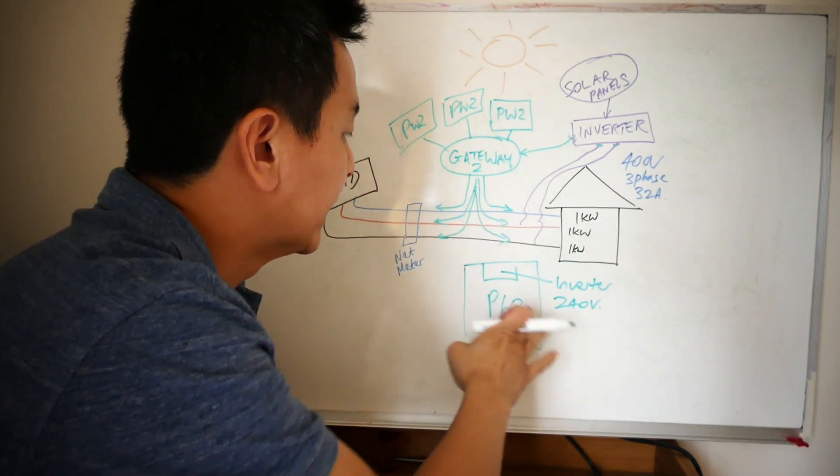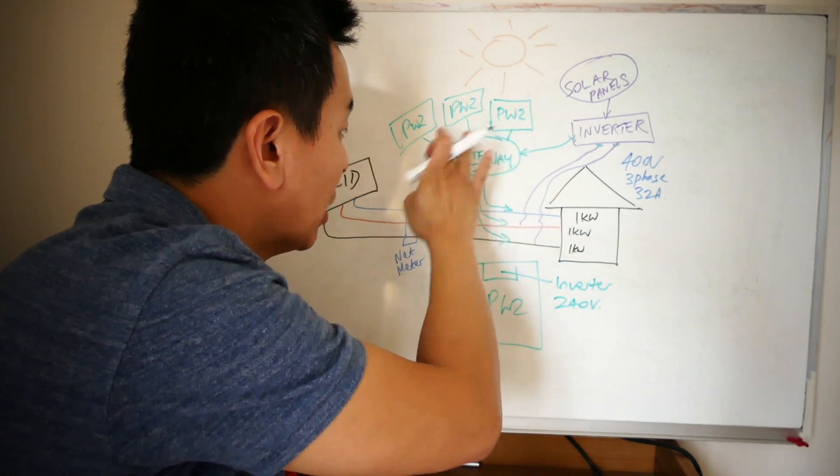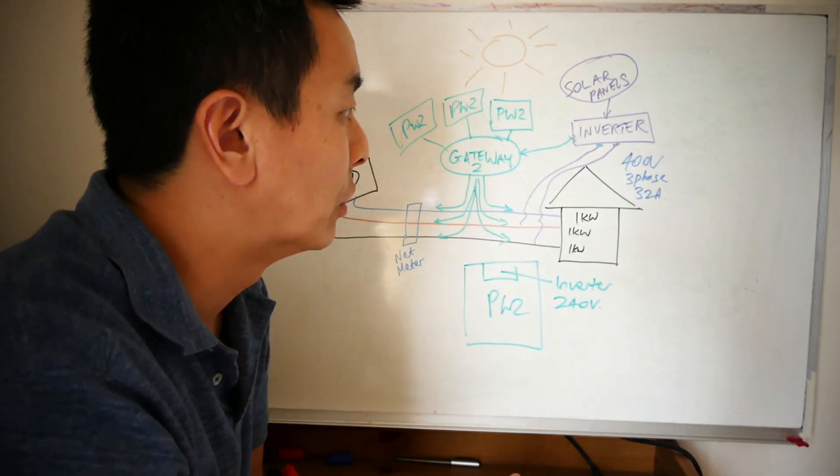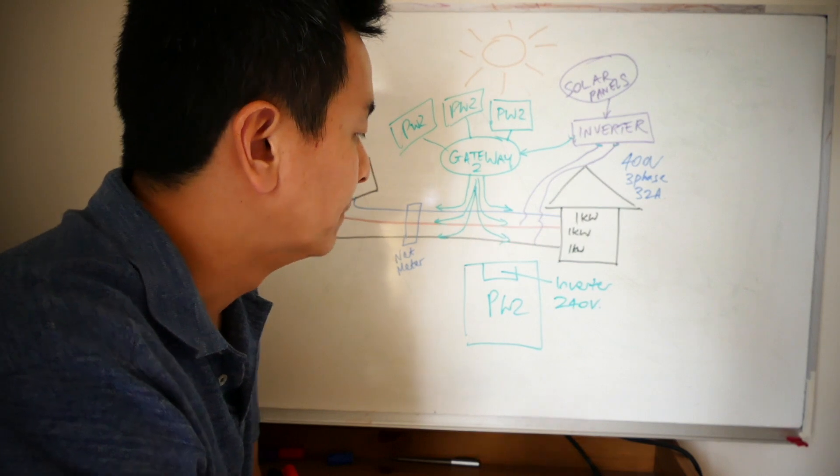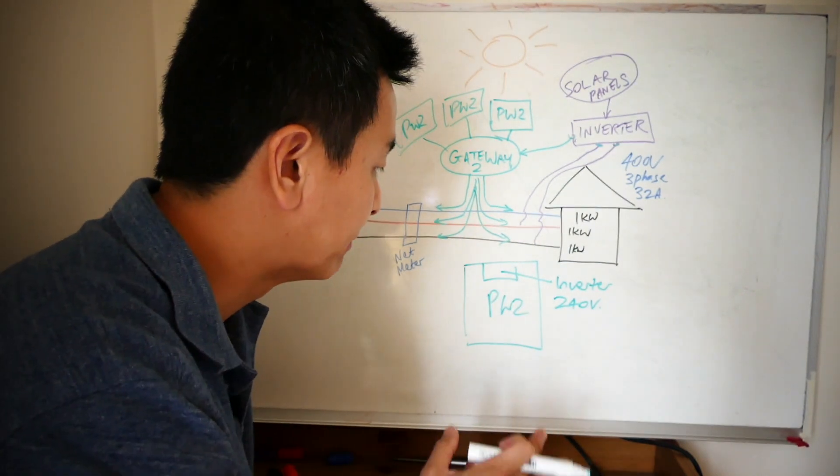Which is now why I understand you can't have an AC-coupled Powerwall 2, even if it's on a Gateway 2 with three Powerwall 2s, one for each phase, supplying a 400 volt solar inverter. So that's not possible.